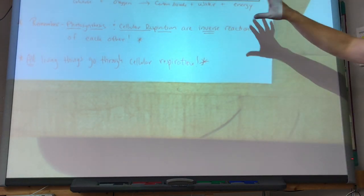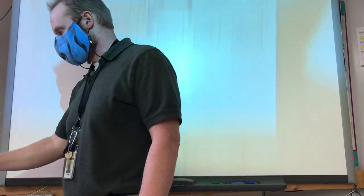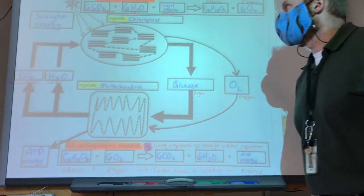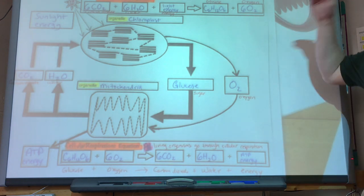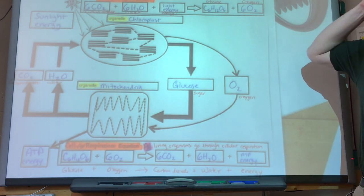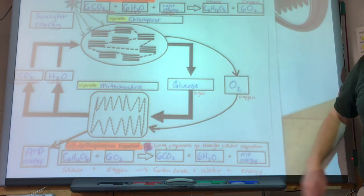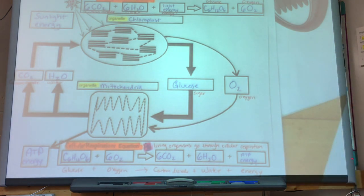A diagram similar to this is what I expect you to label on the test. I expect you to label what the chemical reactants and chemical equations are for both photosynthesis and cellular respiration.